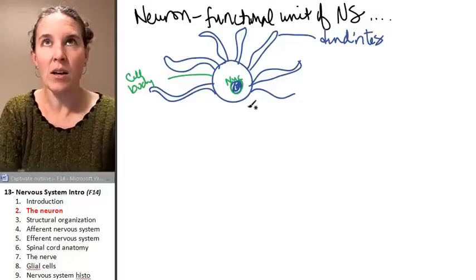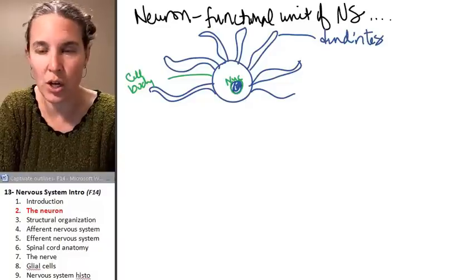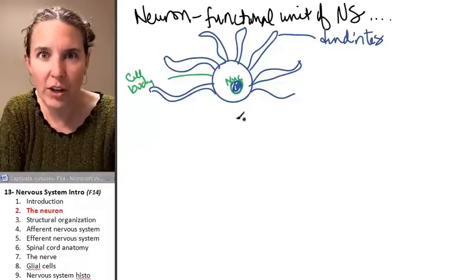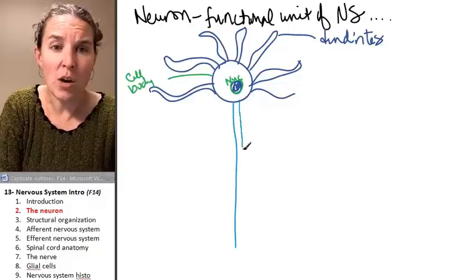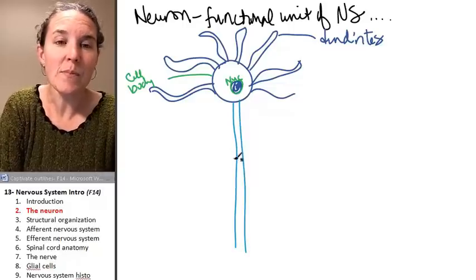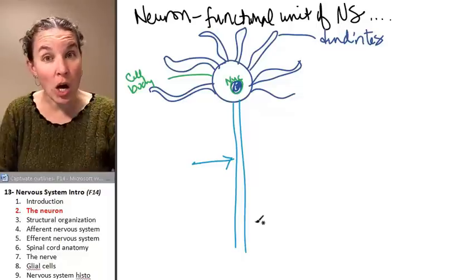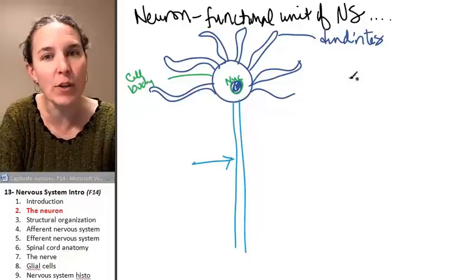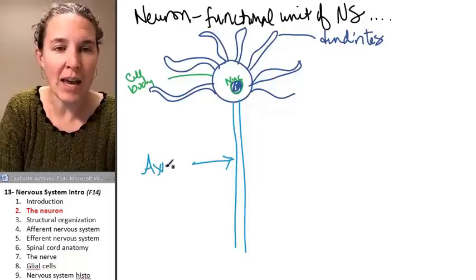We also have another extension. I'm drawing like the quintessential neuron here. It's so quintessential, like the most perfect neuron that you've ever seen. But know that they don't all look like this. Most neurons, many neurons have a very long extension from the cell body that's different from the dendrites. But this one is called the axon.